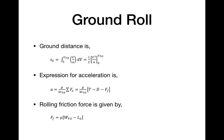The rolling friction force FF = μ × (WTO − LG), where WTO is aircraft takeoff weight and LG is lift during ground roll. The coefficient μ varies with runway condition: concrete (wet or dry) is 0.03–0.05, hard turf is 0.05, firm dry dirt is 0.04, soft turf is 0.07, wet grass is 0.10, and snow or ice is 0.02.